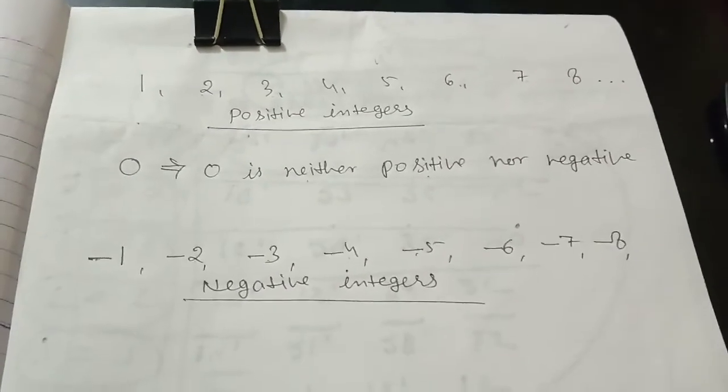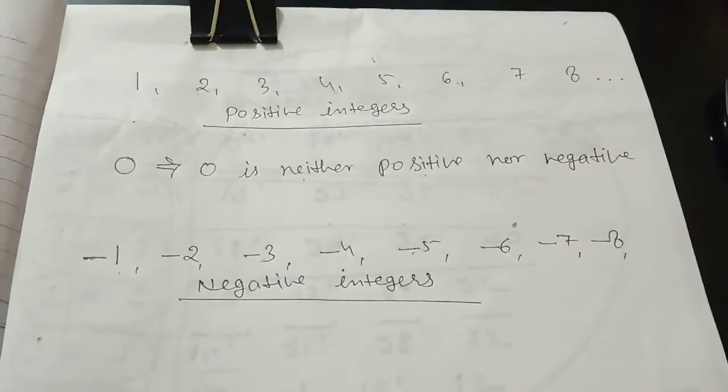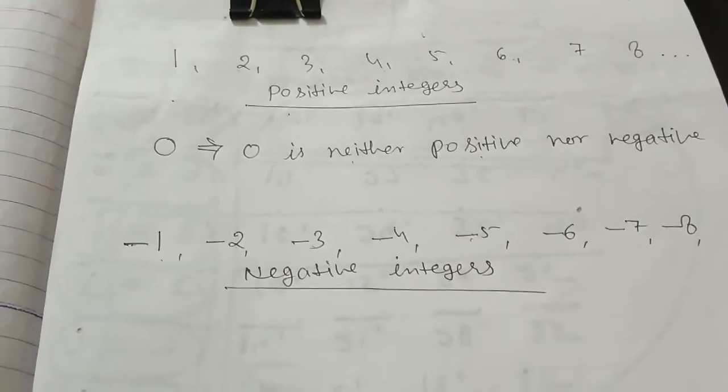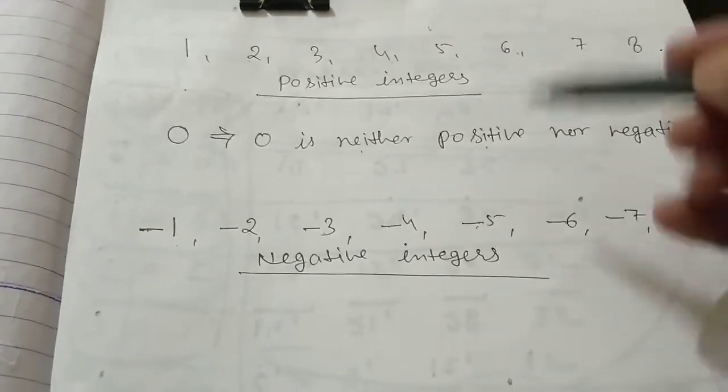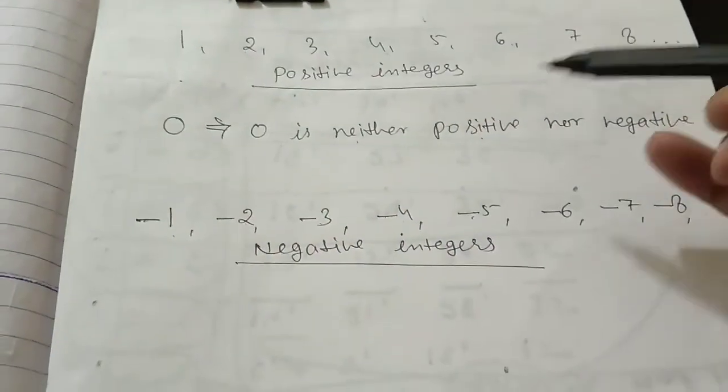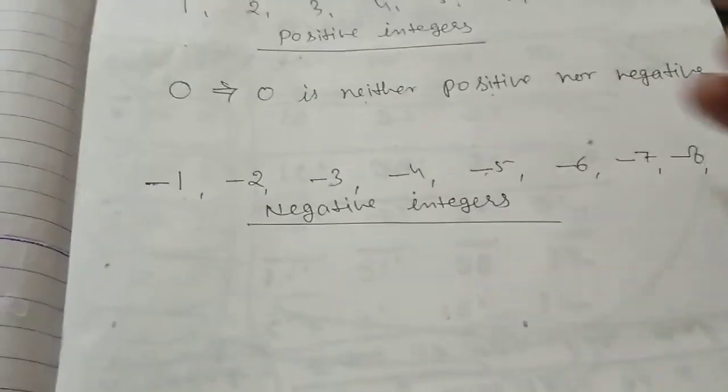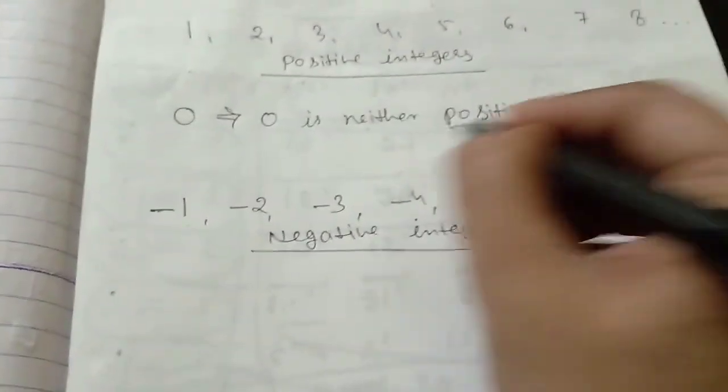Remember, these numbers - you can go to 100, 1000 crores, 10 crores, no matter. You will get the same type of number. Every natural number has its negative numbers. And 0 is neither positive, remember, nor negative.